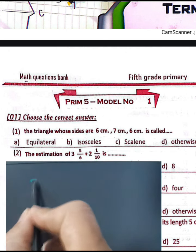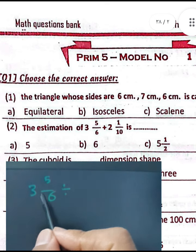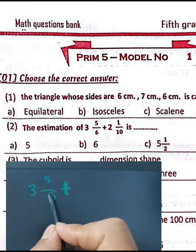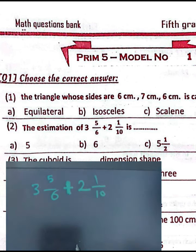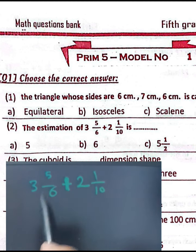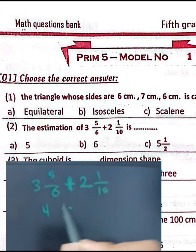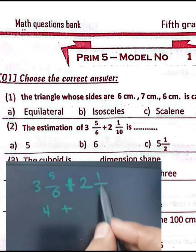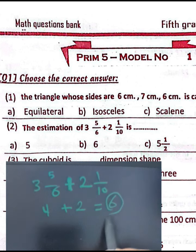Question number two: find the estimation of three and five-sixths plus two and one-tenth. We approximate each mixed number to the nearest whole number. Three and five-sixths approximates to 4, because five-sixths is close to one whole — six over six equals one, so three and five-sixths rounds to 4. And two and one-tenth approximates to 2, because one-tenth is close to zero.